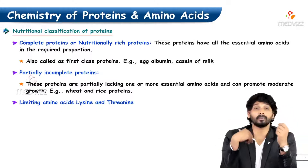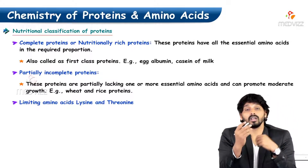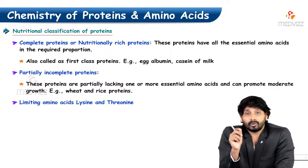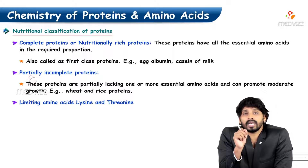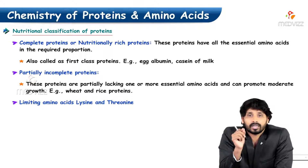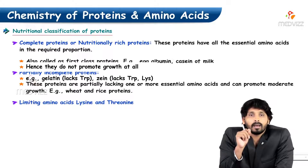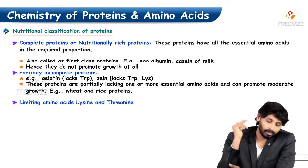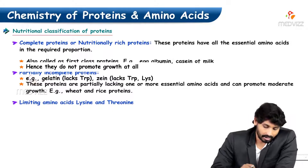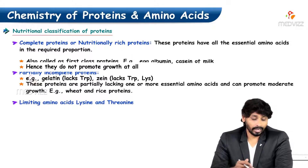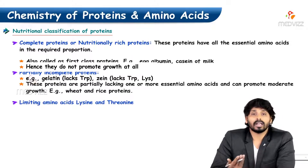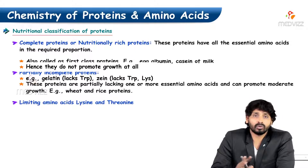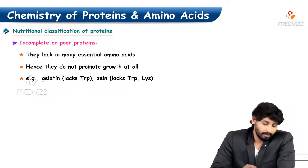Coming to partial incomplete protein: if a particular protein is missing any single amino acid out of the 10 essential amino acids, that protein is known as partially incomplete protein. Examples are wheat and rice proteins, and the limiting amino acids are lysine or threonine — any one of these two will be missing.